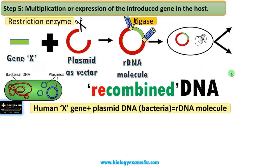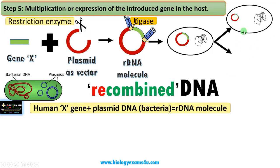Step 5 is multiplication or expression of the introduced gene in the host. Our first intention is to make copies of that gene. This plasmid can replicate inside the host and can make copies — this is called cloning, or making copies.